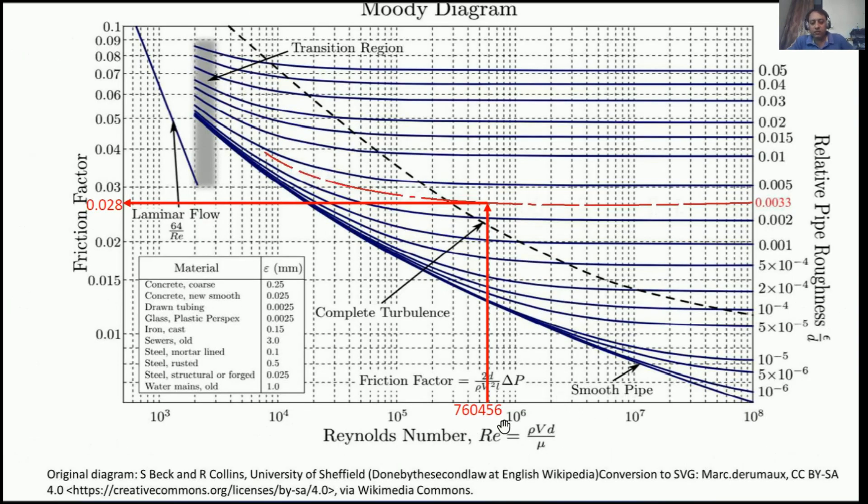Again go to Moody's chart. Reynolds number we have found. Now for 0.0033, you can see this is 0.002 and 0.005, so it must be somewhere in between. Actually, the line was not drawn in this Moody's chart, but we have to predict it. By the help of this red dotted line, I have made the constant relative pipe roughness line of 0.0033 somewhere over here.